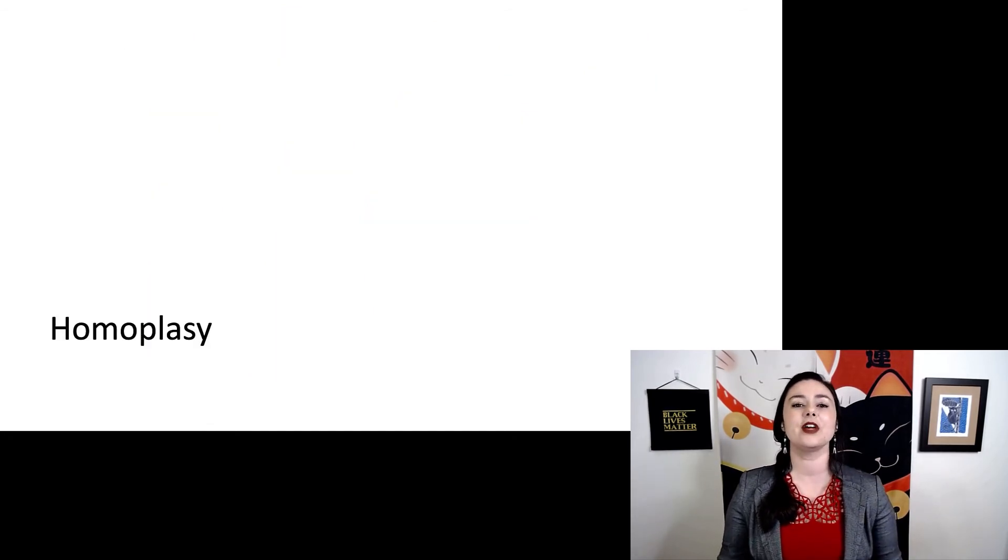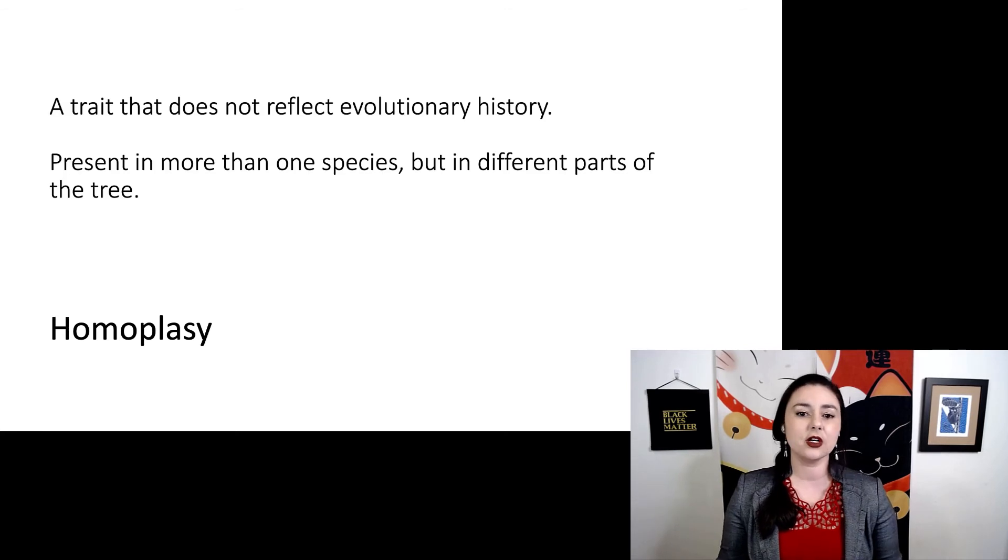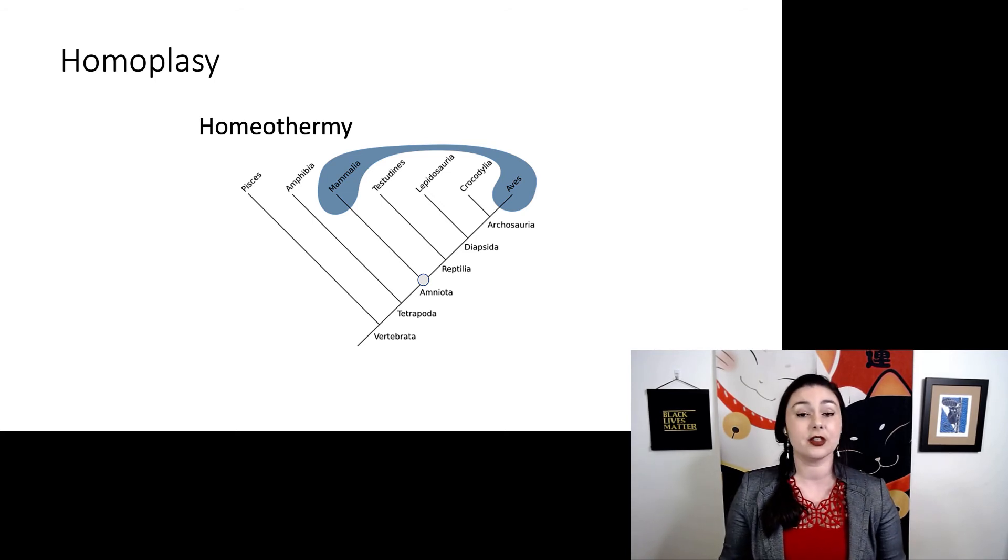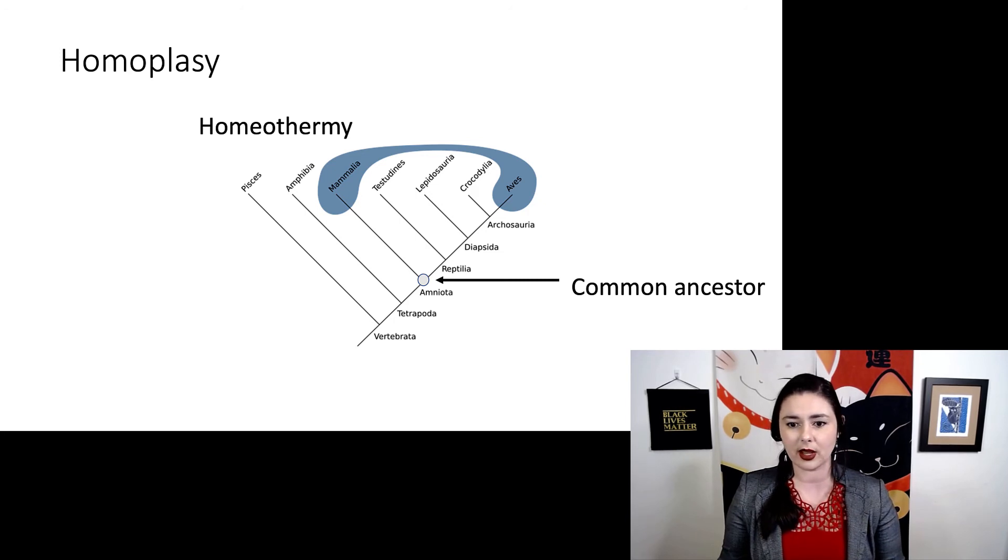In contrast, now we have a homoplasy. So these are traits that do not reflect evolutionary history. And these are similar traits that are present in more than one species, but they're in very different parts of the tree. And it indicates that these traits evolved independently. So the same trait evolved multiple times. One of my favorite examples is to look at homeothermy, or things that can generate their own internal body heat. We find this in both mammals and birds. But you notice the common ancestor is pretty far away. And this trait probably did not originate in that common ancestor. So it is a homoplastic trait.